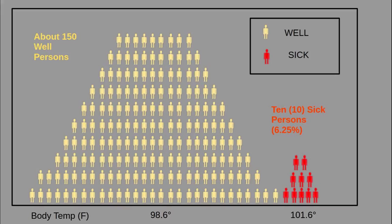For example, if a test has a false positive rate of 10%, then a majority of positive test results will be false if the incidence of the disease is only 6.25%. Even worse, if the test has a false positive rate of 10% and the incidence rate of the disease is only 1.3%, almost 90% — nine-tenths — of the positive test results will be false positives.